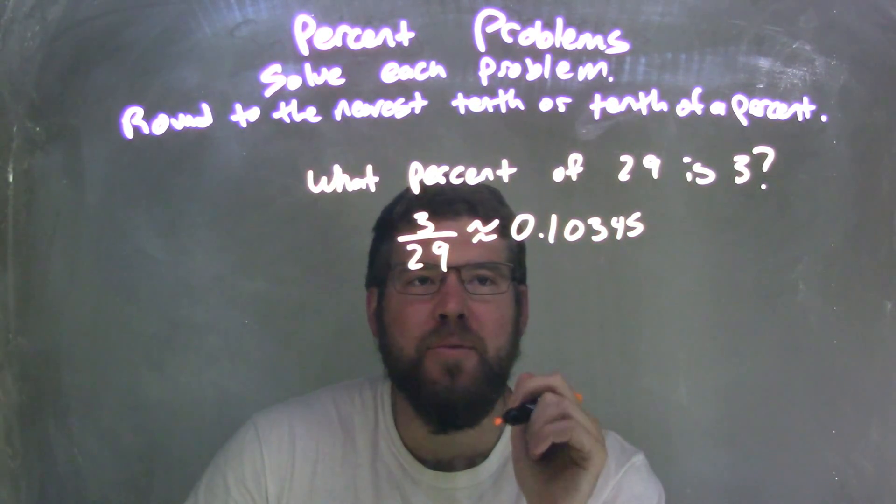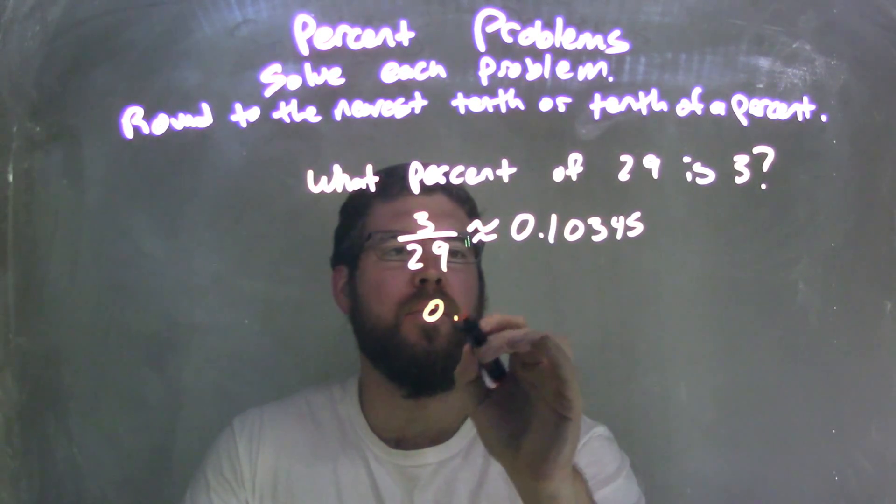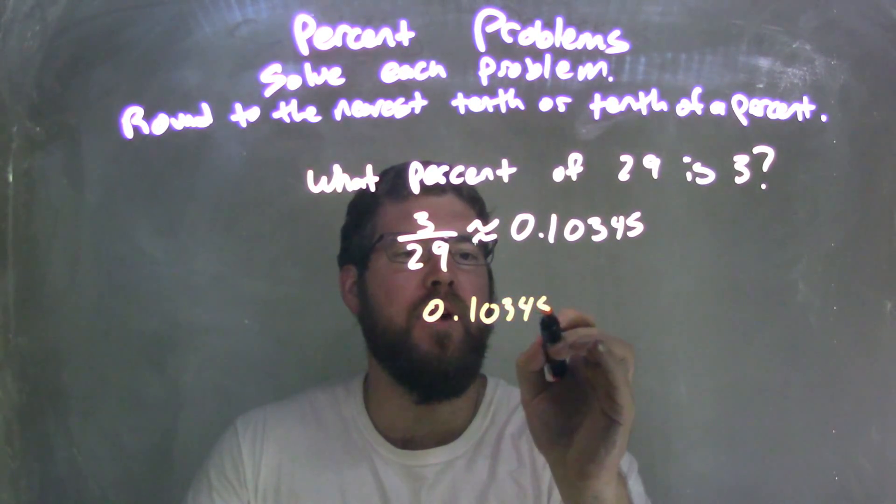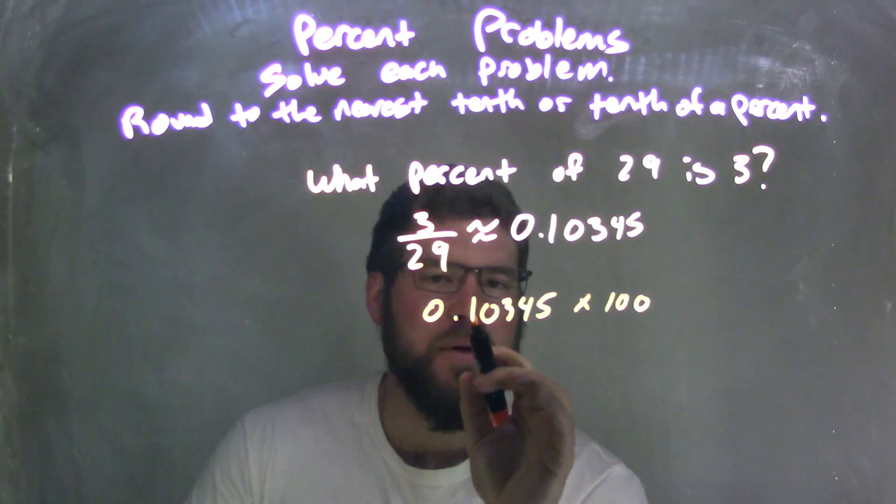I then need to multiply that number by 100 to get the percent. So I have 0.10345 times 100.